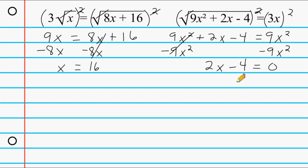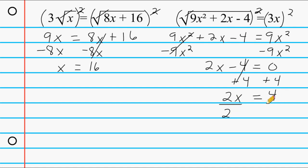Next we're going to do the opposite of minus 4, which is adding 4 to both sides of our equation. On the right side that leaves us with positive 4, and these cancel out on the left. We still have a coefficient of 2, so to turn that into positive 1 we divide both sides by 2. These 2's cancel out giving us positive 1x on the left, and on the right 4 divided by 2 is equal to 2. So for this equation x is equal to 2.